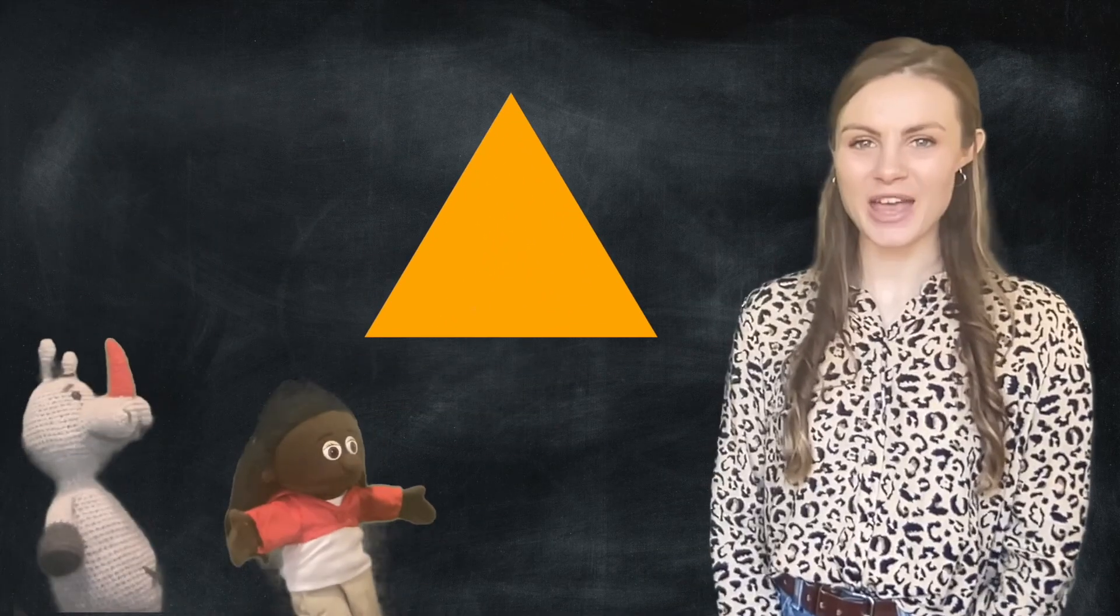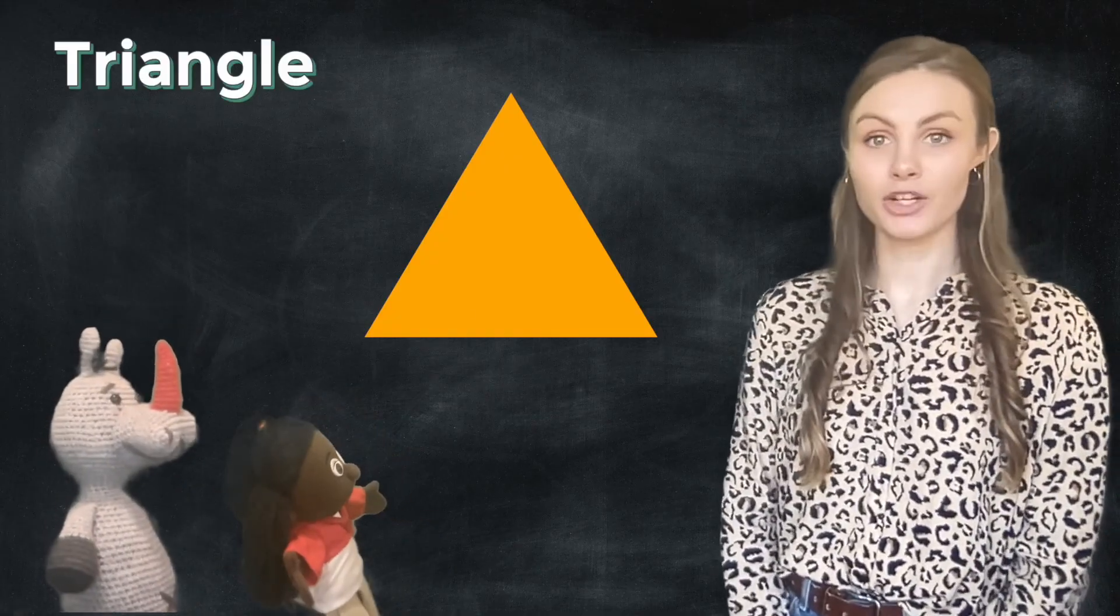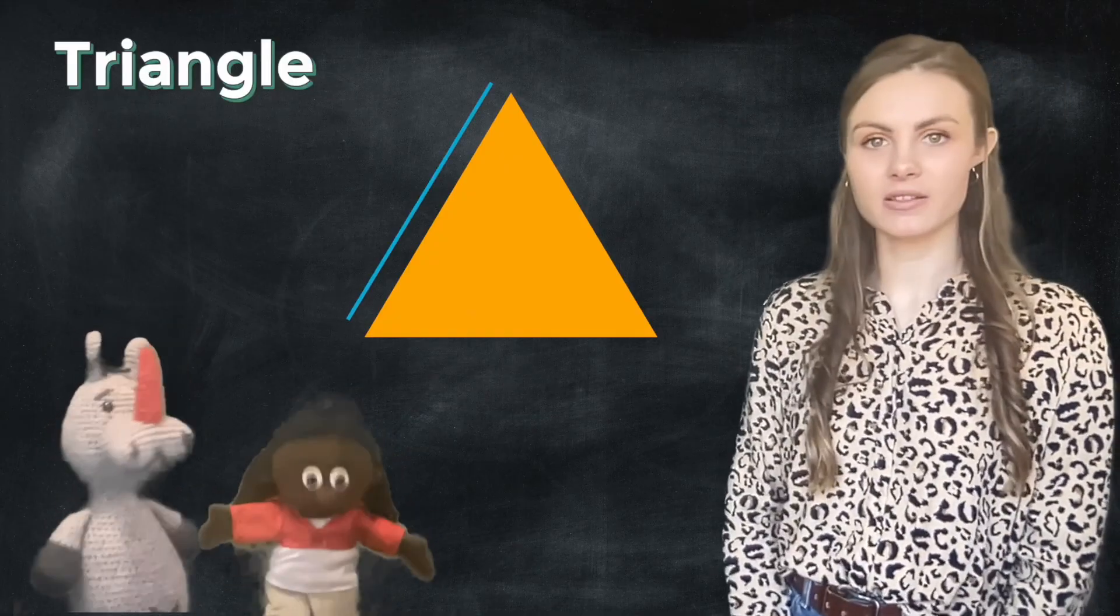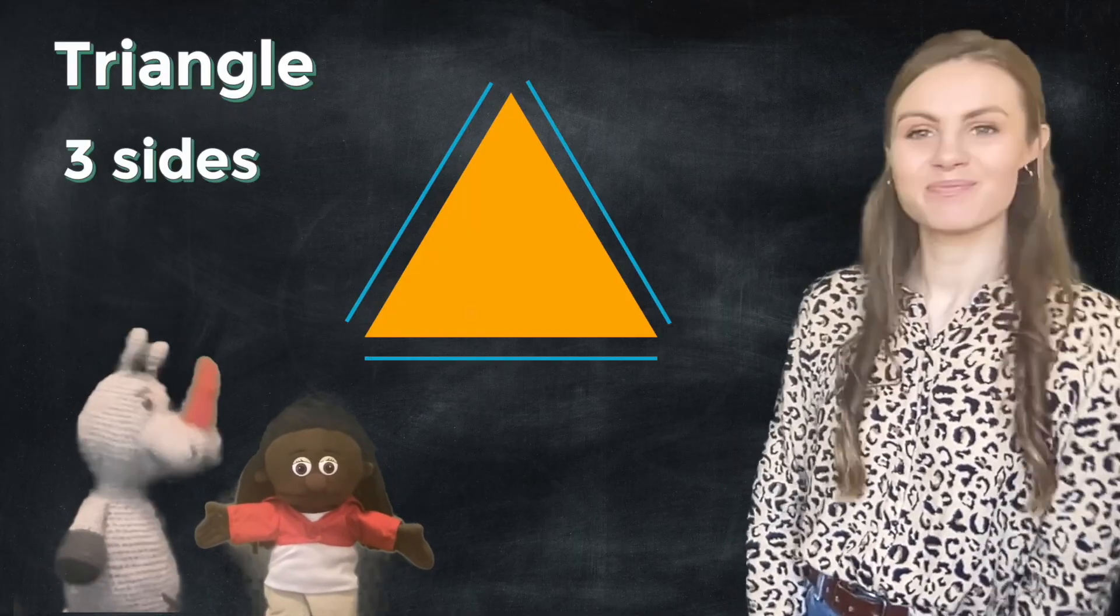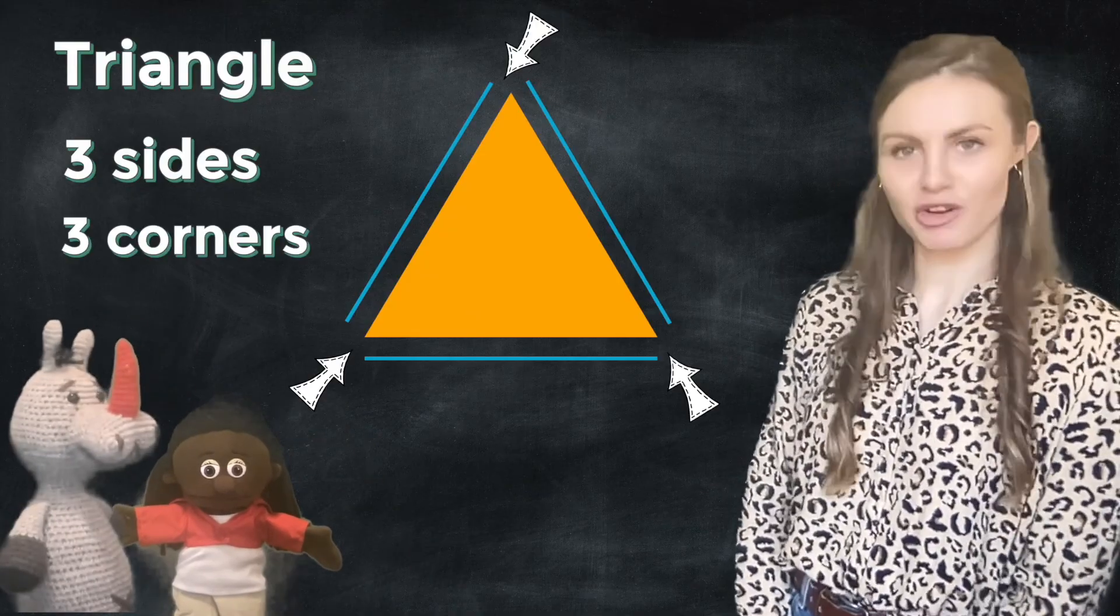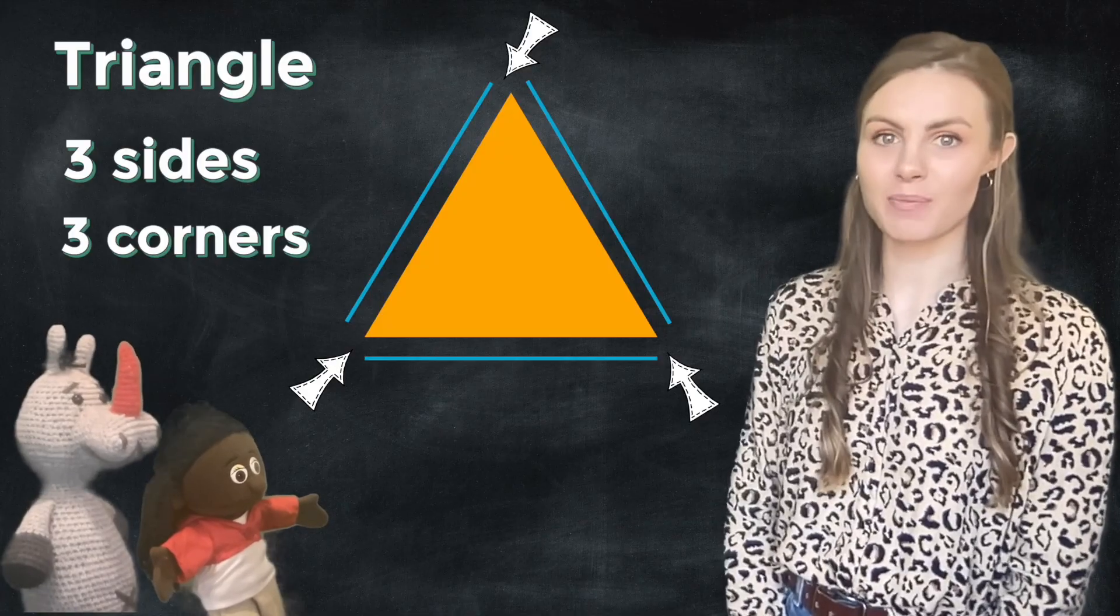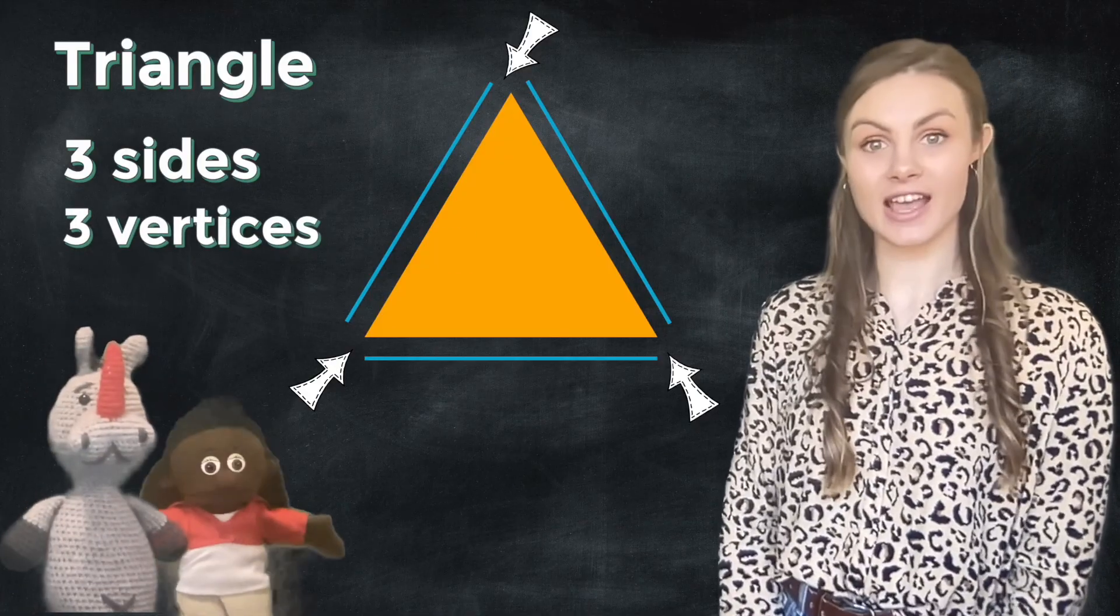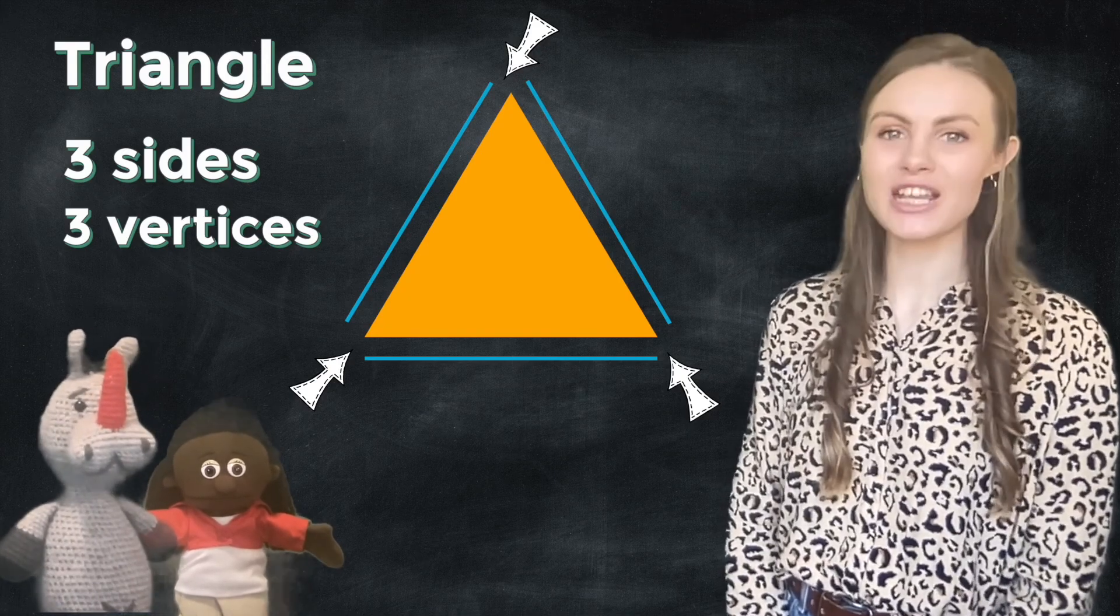Hi Roo! Hi Pig! Do either of you notice anything about this triangle? Roo says it's got three sides. She's absolutely right! What about you Pig? Pig says the triangle's got three corners. Correct again! In maths, we call corners on a 2D shape vertices. So we can say, this triangle has three sides and three vertices.